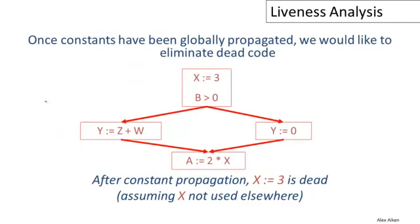In the past several videos, we've looked at a procedure for globally propagating constants through a control flow graph. Here's one of the control flow graphs we've been looking at, and recall that the algorithm we discussed would be sufficient to show that we could replace this use of X by the constant three. And once we do that, this assignment to X might no longer be useful — it might not be used anywhere — and so we could potentially delete this statement from the program, which would be an important optimization.